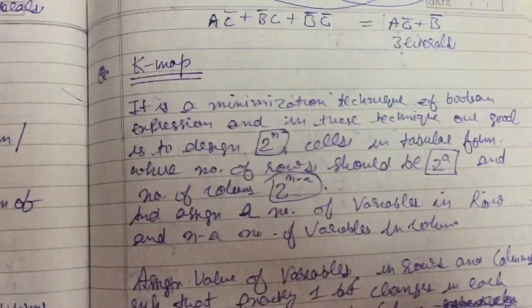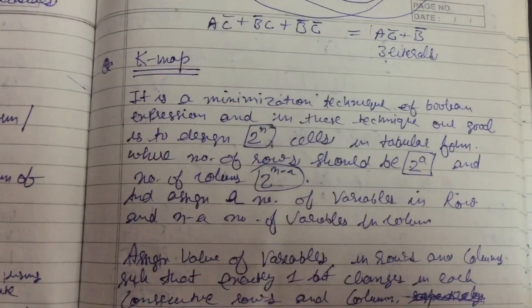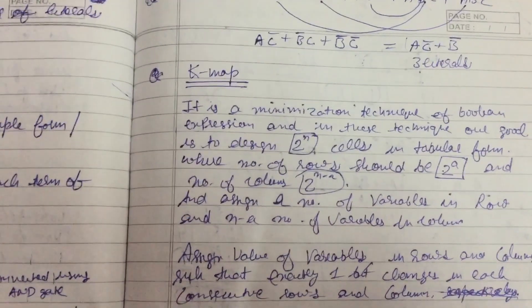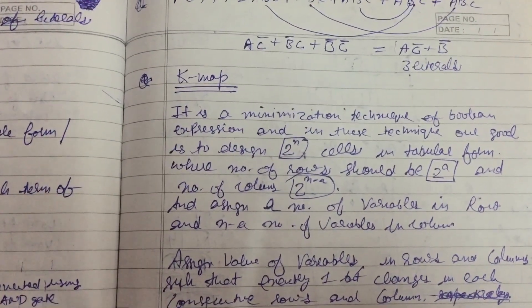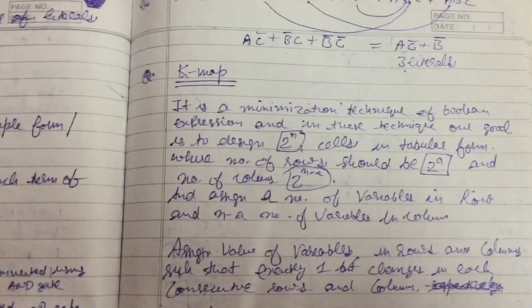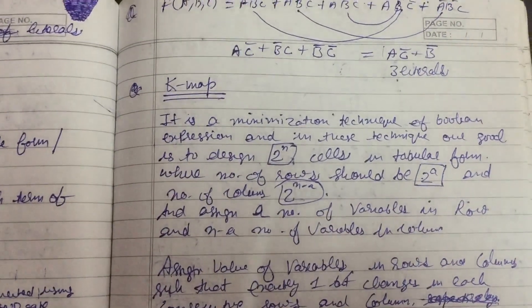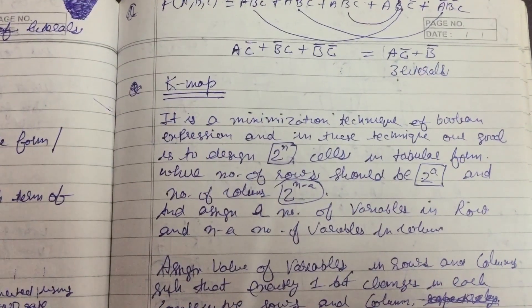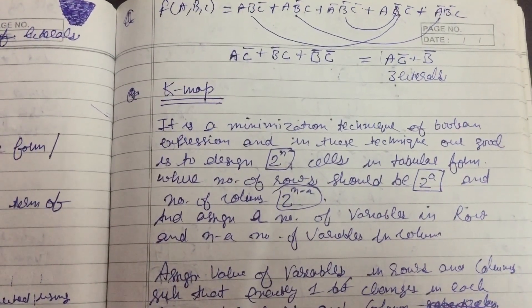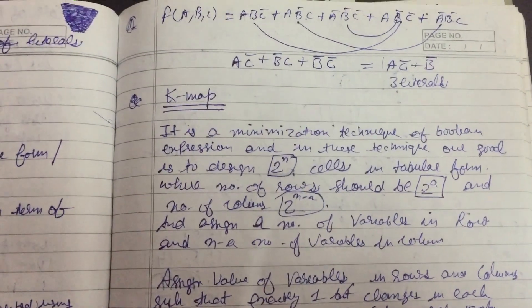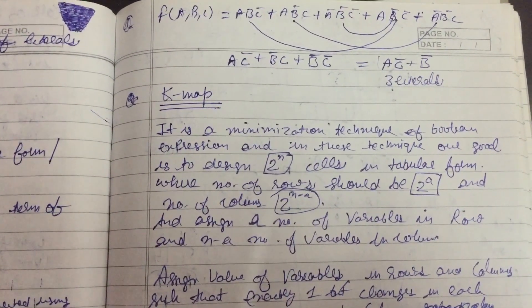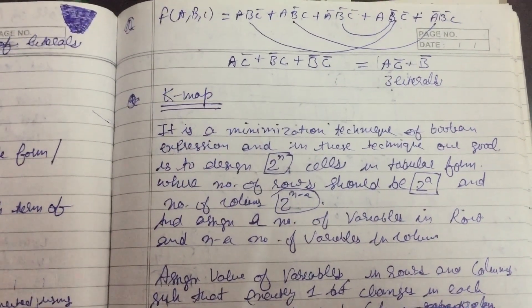What is K-map exactly? As you can see, there are some circles here which are very important and asked in any competitive exams. K-map or Karnaugh map is a minimization technique of Boolean expression. In this technique, our goal is to design n cells in tabular form where the number of rows should be 2 raised to a and the number of columns should be 2 raised to n minus a.